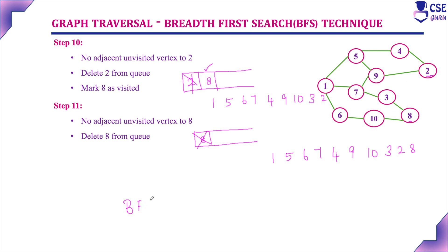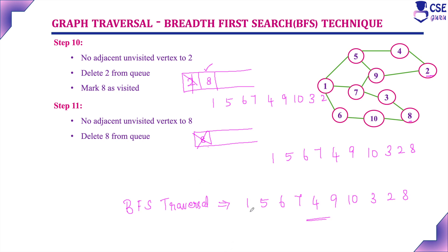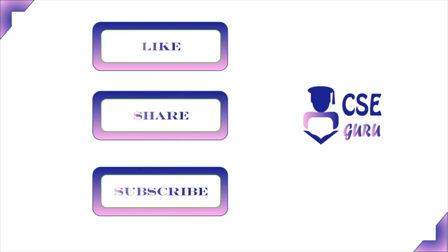The BFS traversal for this given graph is: 1, 5, 6, 7, 4, 9, 10, 3, 2, 8. This is the order of vertices we have visited — this is the BFS traversal order for this given graph, and this is the procedure to implement it. Thank you for watching this video.